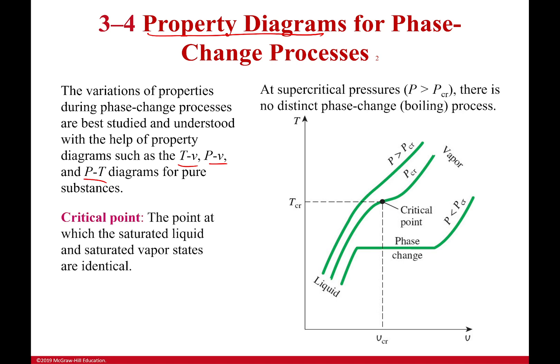In these diagrams there is a point called the critical point. This is the point at which the saturated liquid and saturated vapor states are identical — it means there is no change here. You can see there's this flat bar where the temperature is constant for a little while and it's changing phase. Right here though there is no longer really any phase change process — it just happens all at once. It goes straight from liquid right to vapor at that critical point.